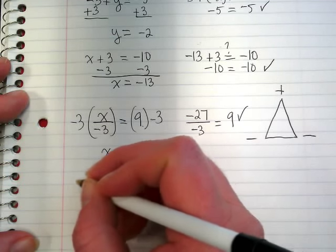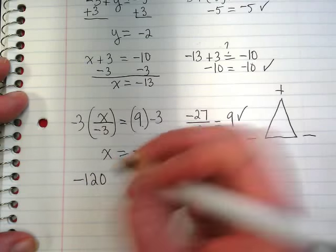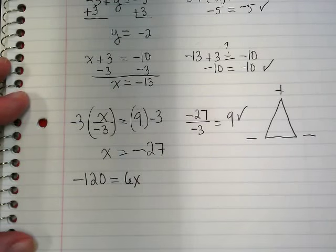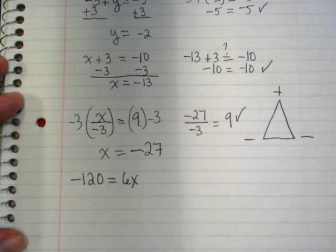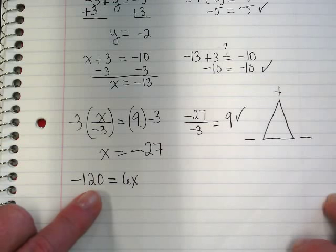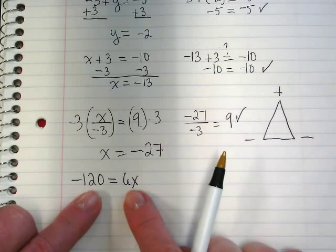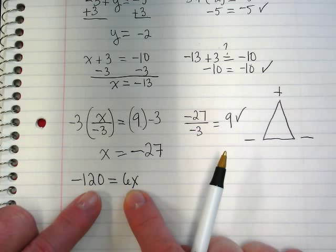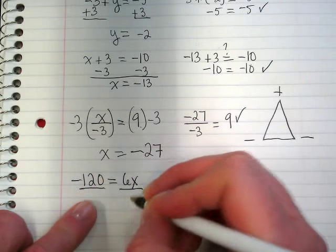Last example. I want you guys to write down negative 120 is equal to 6x. This one's interesting because the answer is on the left side. We have to focus on the right side. And what kind of problem is 6x? Multiplication. So when I see multiplication, I need to do... Good. Divide by 6.